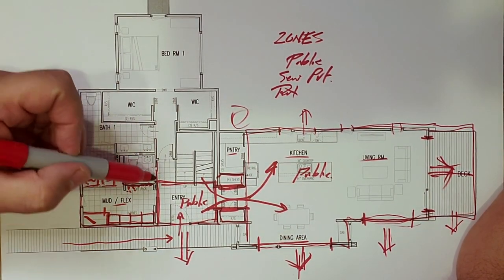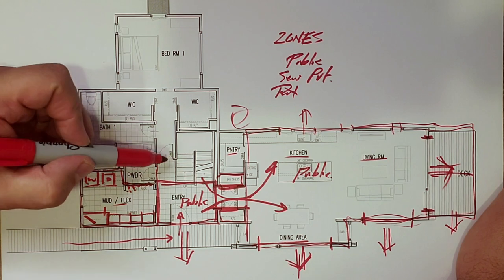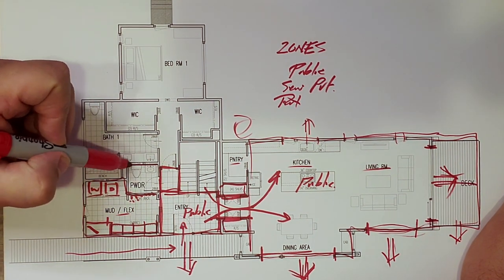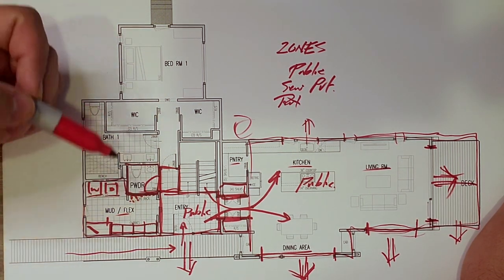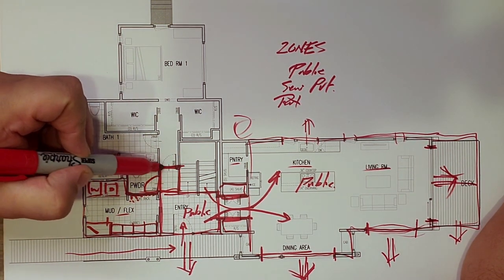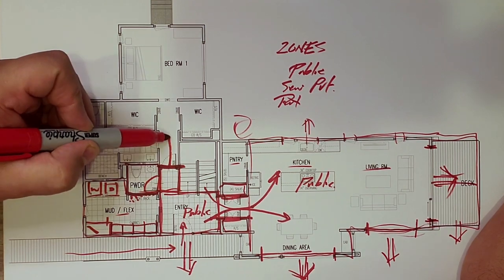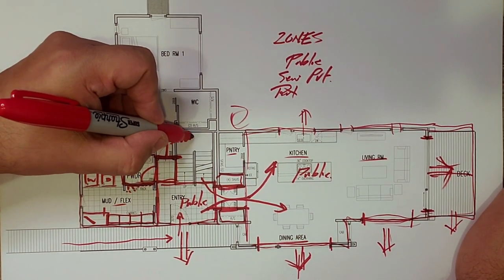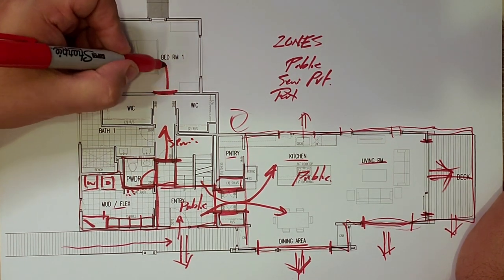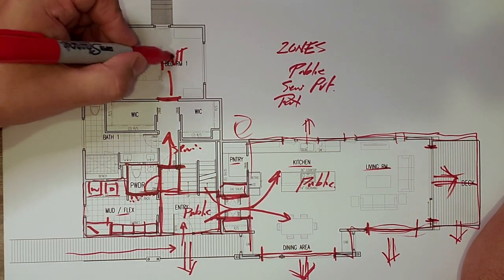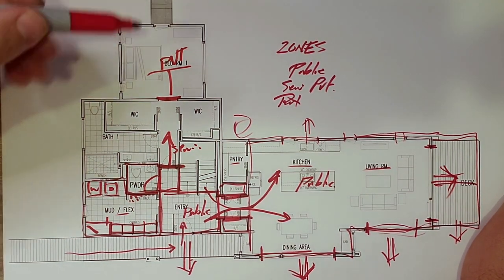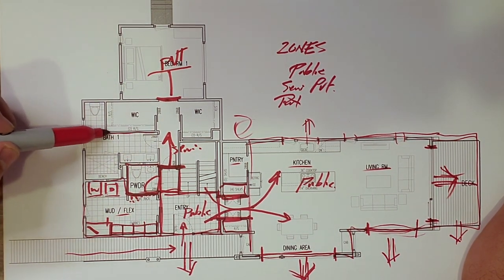And then off of that public area, we have an extension of the hallway, and that bleeds into the powder room, which is a public space. But pretty much everything from here, I would consider this semi-private here. And then here, we'll make that private. And so that's the owner's bedroom. But before you get to the bedroom, we have the bathroom here.